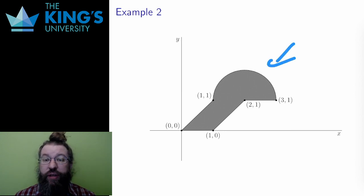Here is another region that I want to integrate over. How do I set up this integral? Well here I'm going to use three regions: two triangles, and then a half circle.